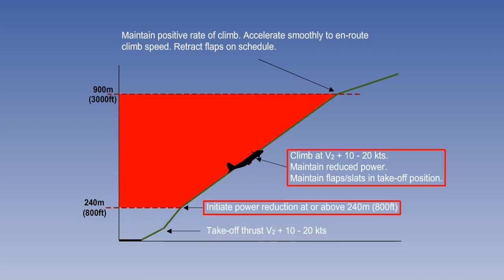At or above 800 feet, power will be reduced to the noise abatement setting, but flaps and slats will be left in the take-off position to maintain the extra lift, with speed maintained at V2, plus 10 to 20 knots.